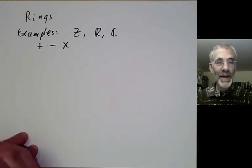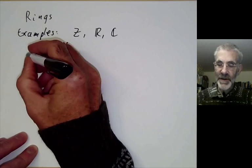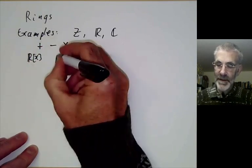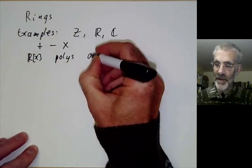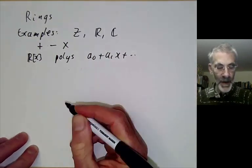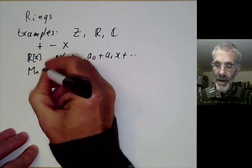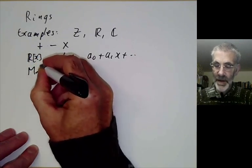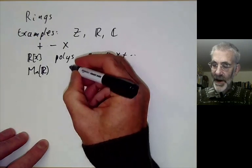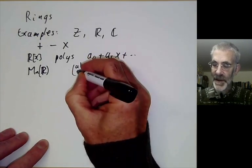There are plenty of other examples. For example we have polynomial rings — these are just polynomials of the form a₀ plus a₁x and so on. Or you can have matrix rings: M_n(R) means n by n matrices, for example we might have two by two matrices.